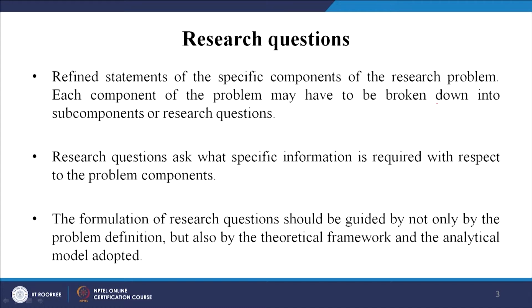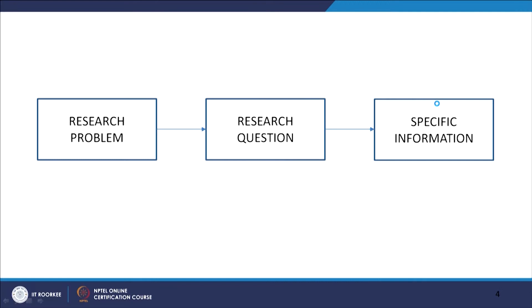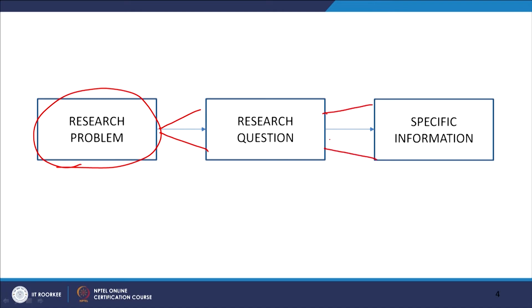Each component of the problem may have to be broken down into sub-components or research questions. So this research problem, once you have identified it, may give rise to several research questions — maybe one, two, or more sub-components, sub-research questions. For understanding or analyzing these research questions, you need specific information, and so you start collecting information. Research question asks what specific information is required with respect to the problem components.